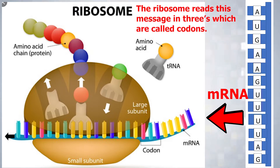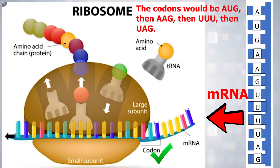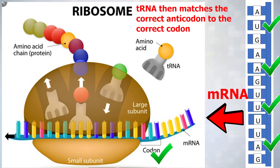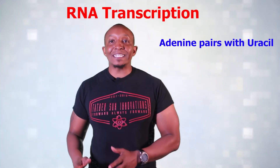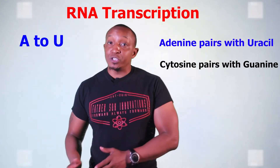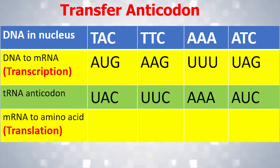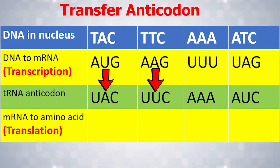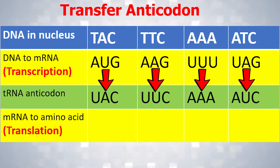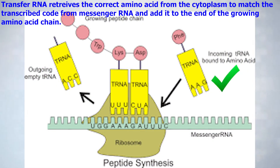The ribosome reads the message in threes, which we called codons. The codons would be AUG, then AAG, then UUU, then UAG. For each set of three nucleotides or codons, transfer RNA matches the correct anticodon. With RNA, adenine matches with uracil and cytosine matches with guanine — A to U and C to G. So the correct anticodon for AUG would be UAC, the anticodon for AAG would be UUC, for UUU would be AAA, and for UAG would be AUC. The transfer RNA then retrieves the correct amino acid from the cytoplasm to match the transcribed code from messenger RNA and adds it to the end of the growing amino acid chain.